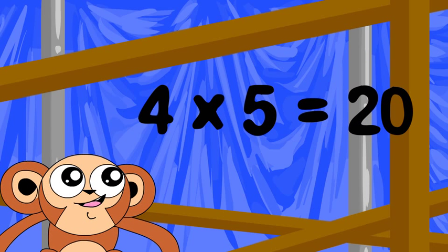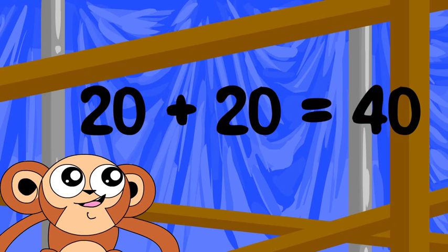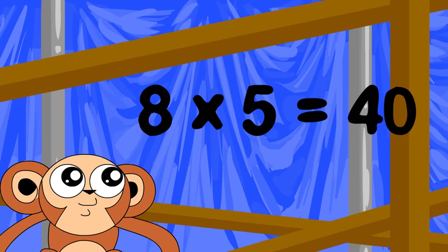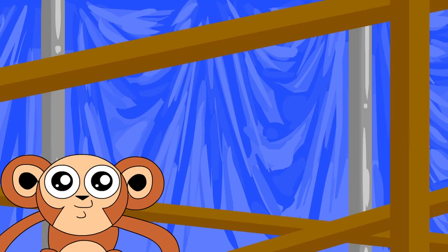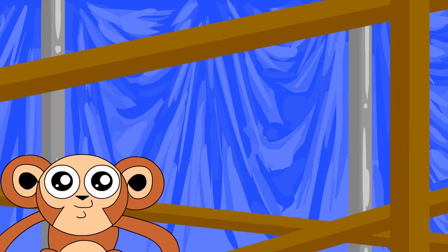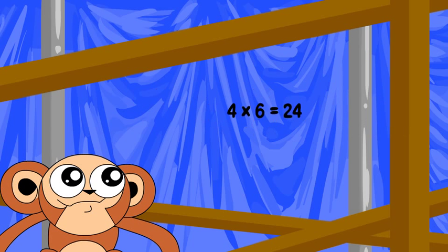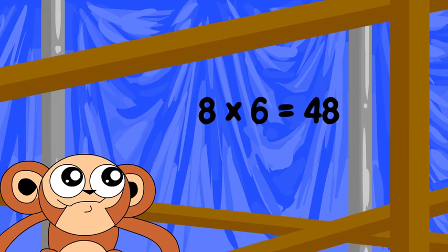4 times 5 is 20. Double 20 is 40. So 8 times 5 is 40. 4 times 6 is 24. Double 24 is 48. So 8 times 6 is 48.